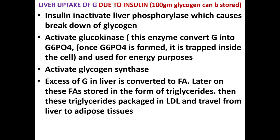Insulin activates glucokinase, which converts glucose into glucose-6-phosphate. Once glucose-6-phosphate is formed, it is trapped inside the cell and used for energy. Insulin also activates glycogen synthase to cause the synthesis of glycogen. Excess glucose in the liver is converted to fatty acids, which are stored in the form of triglycerides. The first priority for glucose entering the liver is conversion to glycogen; remaining glucose is converted to fatty acids, stored as triglycerides in adipose tissues, packaged in low-density lipoprotein, and transported from the liver to different adipose tissues.